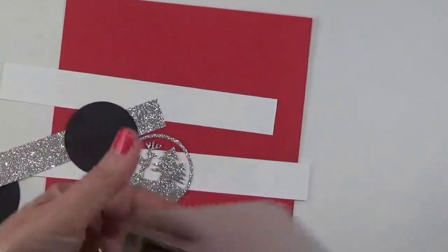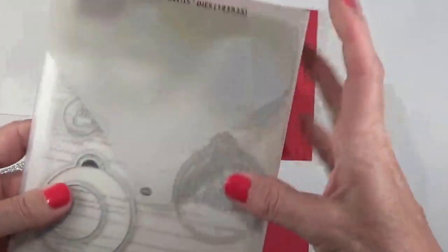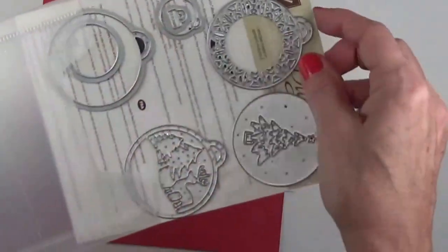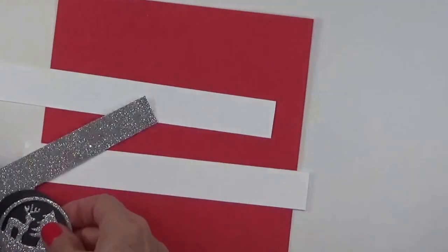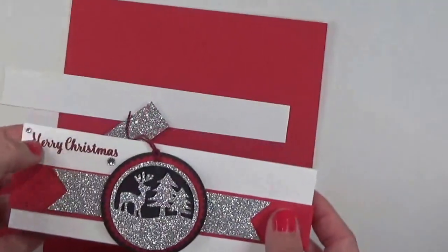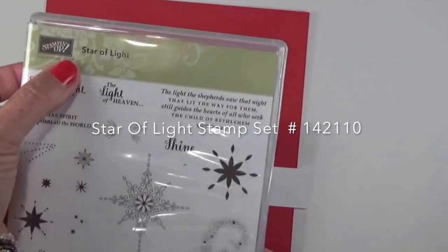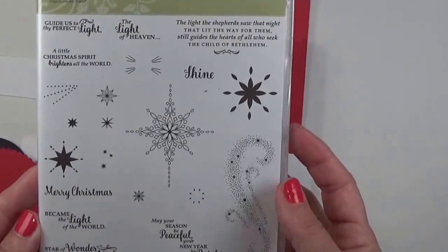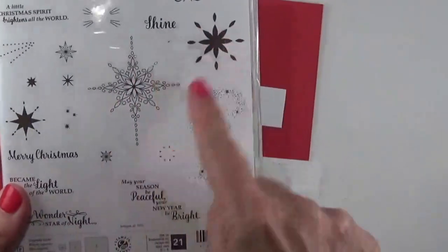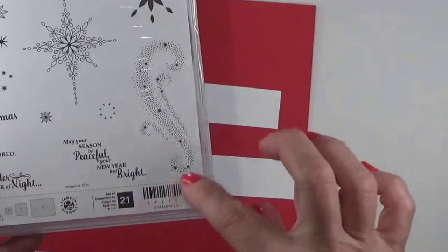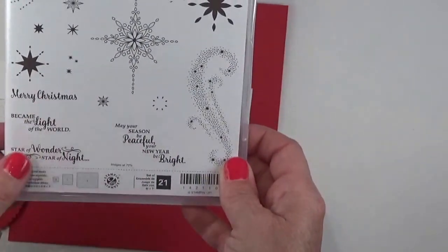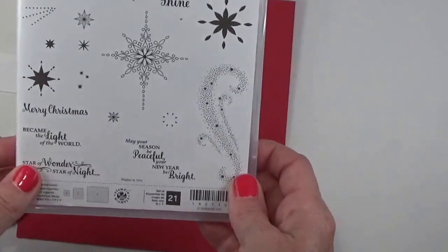For these two pieces I used the Merry tags framelit dies. The two pieces that I used was this one here with the deer and this ornament die to cut those out. Those are all going to get layered one on top of another to create the little medallion. I also have the Merry Christmas stamped there and I used the Star of Light stamp set. This stamp set is absolutely fabulous. There's a ton of stamps in this set with the stars and this makes me think of a whirlwind of snow with glittery stars. I'm going to use the Merry Christmas one today.